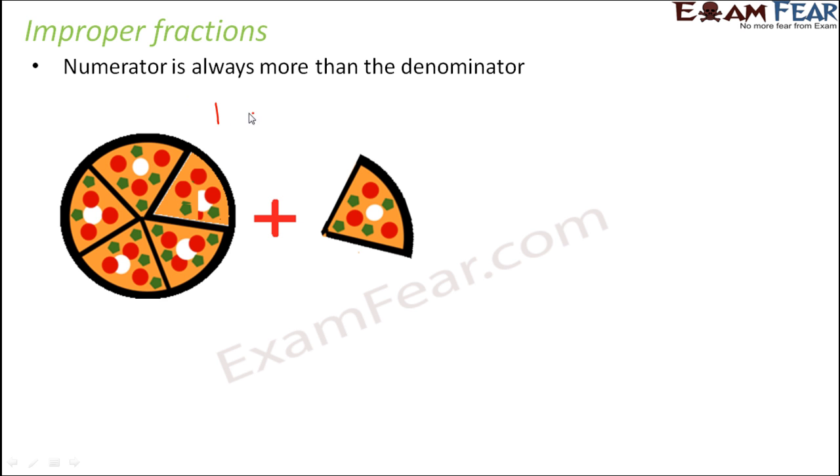You have eaten one complete pizza plus one slice out of five slices of the second pizza. So basically you have eaten one plus one by five.